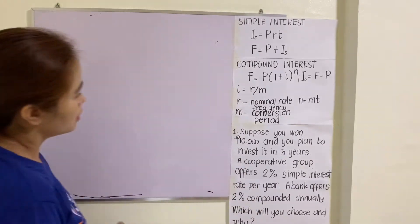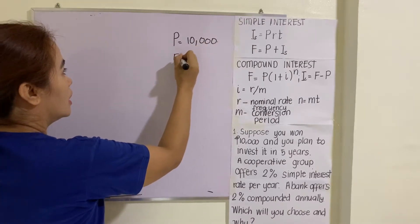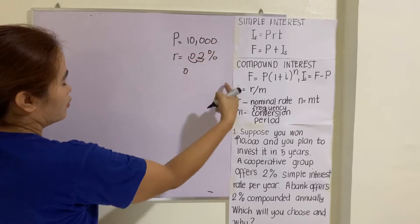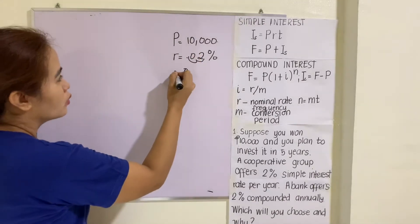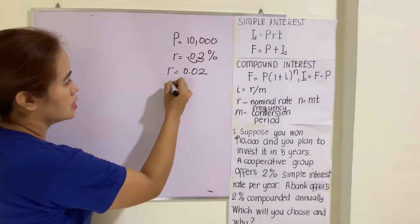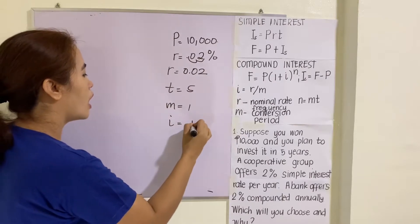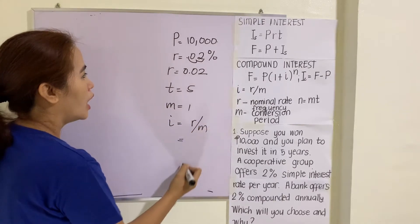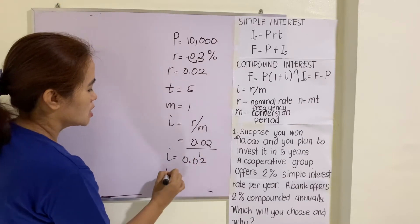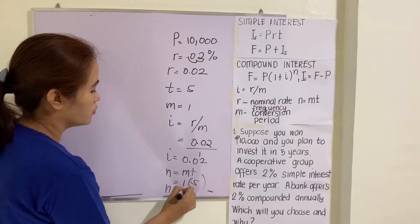Let's find out. First, let's identify the given: P is ten thousand. R is two percent — changing to decimal by moving the decimal point two places to the left gives R equals 0.02. T is five. M is annually, so M equals one. I equals R divided by M, which is 0.02 divided by one, so I equals 0.02. N equals M times T, so N equals one times five, giving N equals five.